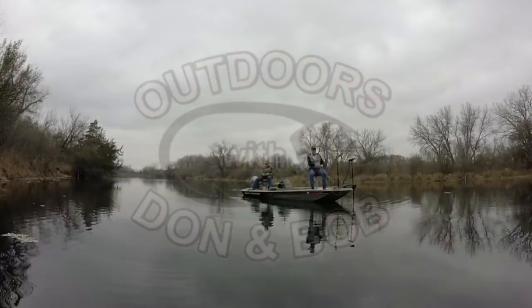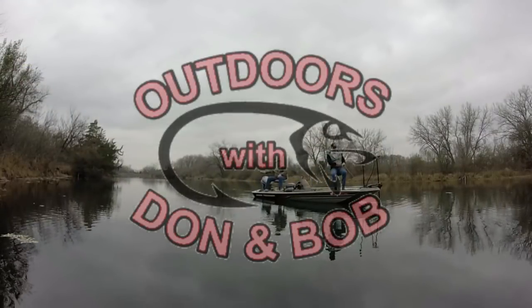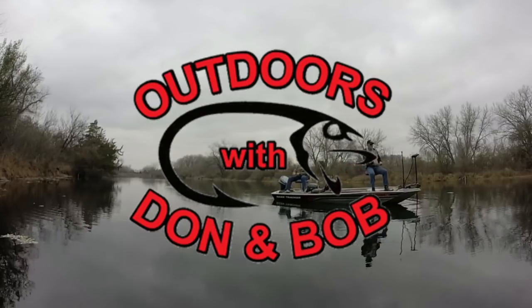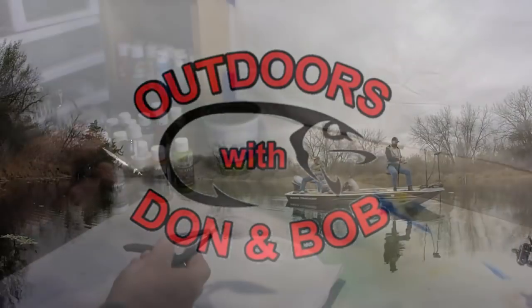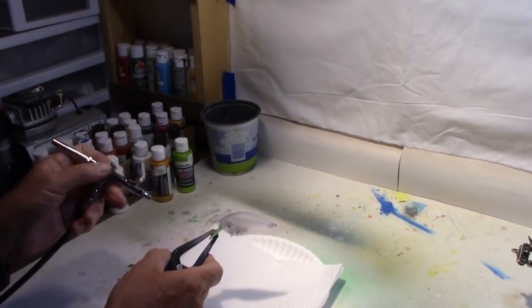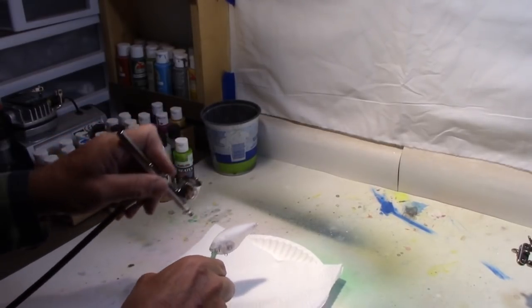Hey guys, today we're going to paint a 2.5 square bill and we're going to do it in a crawdad pattern. We've got our 2.5, we're going to use some pearlized colors for this one. But as usual, let's get started out with a base coat.